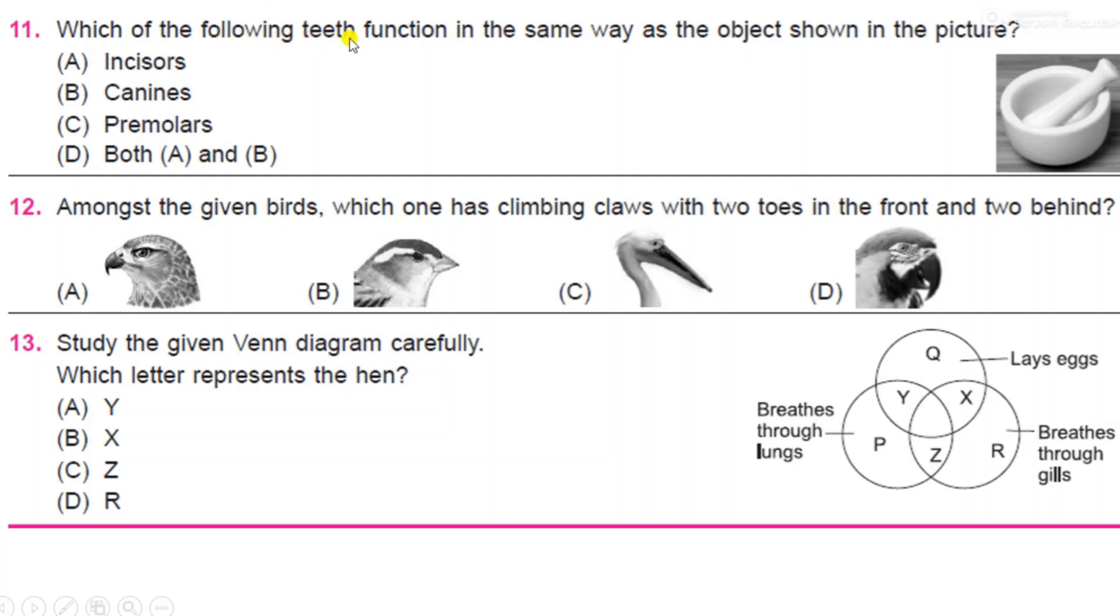Next: which of the following teeth function in the same way as the object shown in the picture? Here: incisors, canines, premolars, and both A and B. Look at the object here. The correct answer is C, premolars.